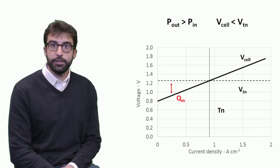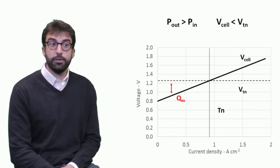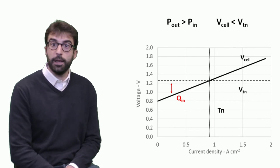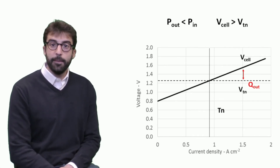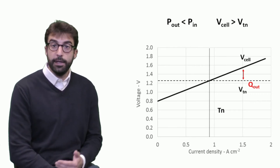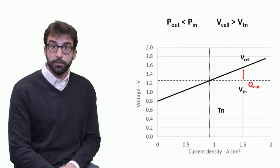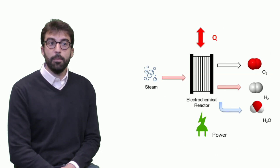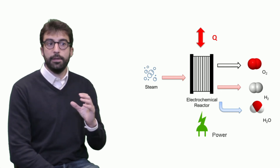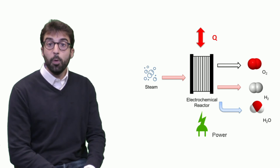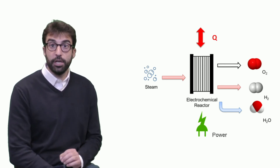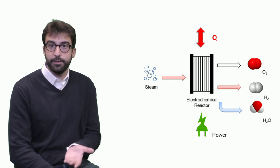Operating below thermoneutral means we need to feed the cell with an additional amount of energy, usually in the form of heat from the external. So in this case the inlet is not only electrical power but also external heat. Conversely, if power output is lower than power inlet, the cell operates above thermoneutral — producing additional heat beyond what is needed for the reaction. This excess heat must be removed from the electrolyzer to maintain constant temperature. The system then has a heat exchange with the external, and operating at thermoneutral means no heat exchange, which is why it is called thermoneutral.